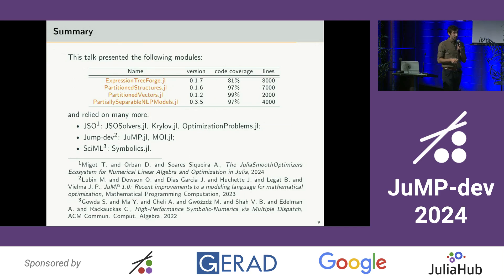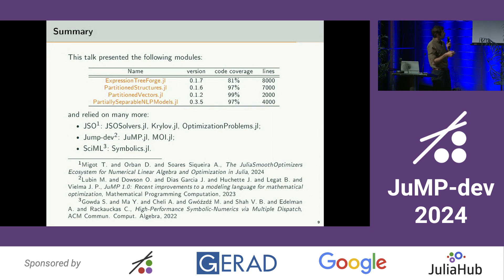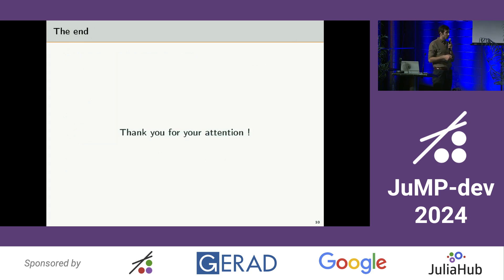To summarize this talk, I've presented several modules for optimization, but I relied on many more from GSO, such as GSO solvers, Krylov, and optimization programs. These modules are from JuliaDev, the JuMP/NLPModels interface, and from SciML with Symbolics. Thank you for developing those modules and for your attention.